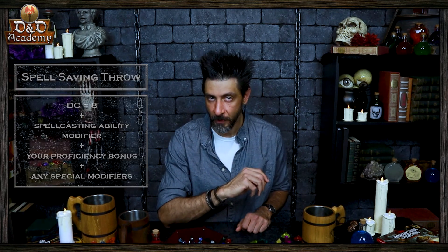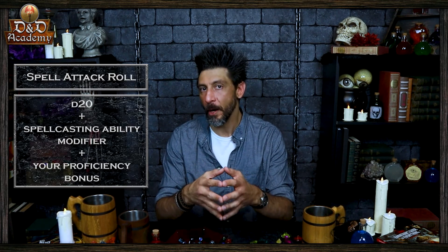The last parts of casting a spell that we're going to cover are saving throws and attack rolls. Many spells specify that a target can make a saving throw to avoid some or all of the spell's effects. The spell specifies the ability the target uses for the save, and what happens on a success or failure. The DC to resist one of your spells equals 8, plus your spellcasting ability modifier, plus your proficiency bonus, plus any special modifiers. Other spells require the caster to make an attack roll to determine whether the spell effect hits the intended target. Your attack bonus with a spell attack equals your spellcasting ability modifier plus your proficiency bonus. Most spells that require attack rolls involve ranged attacks. Remember that you have disadvantage on an attack roll if you are within 5 feet of a hostile creature that you can see and that is not incapacitated.